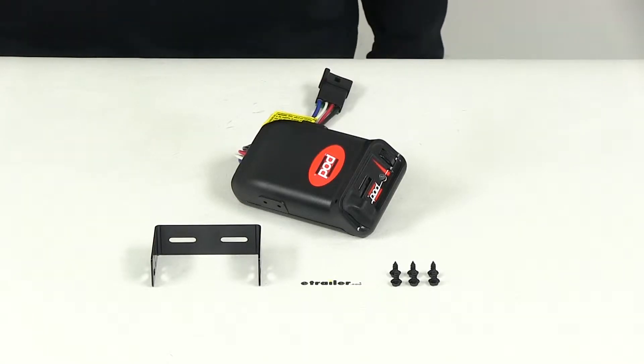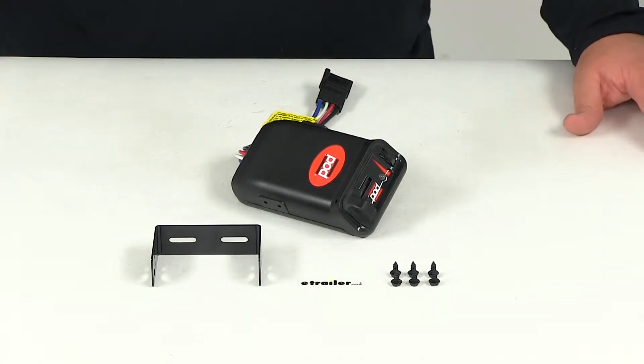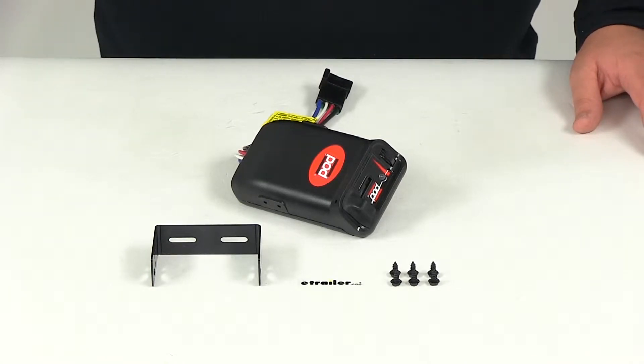Today we're going to be reviewing part number 39523. This is the Pro Series Powertrek electronic brake controller for trailers with one to two axles.